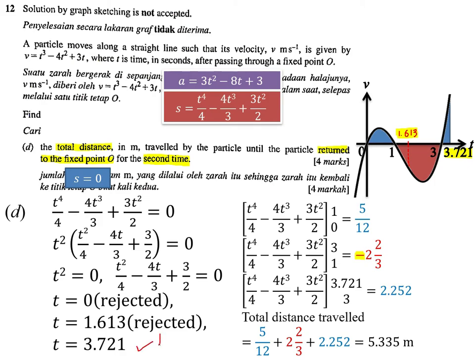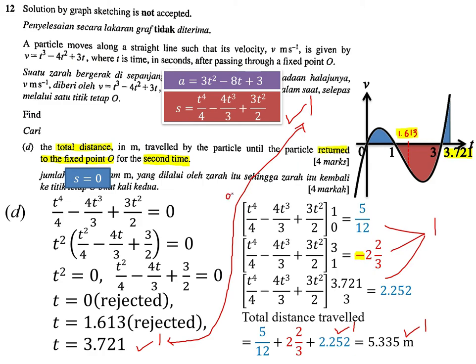The second mark is given when you integrate correctly with the correct ranges. The third mark is when you get all values correct and add them up. The fourth mark is the final answer, 5.335. Regarding the displacement equation: it shares one mark with the time, because if a student cannot find t = 3.721 using this method everything goes wrong — so the mark for the displacement equation is still awarded.